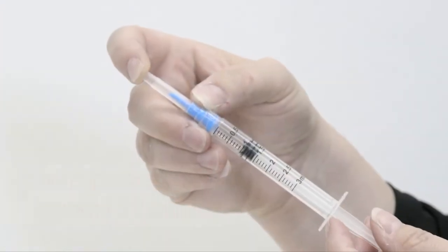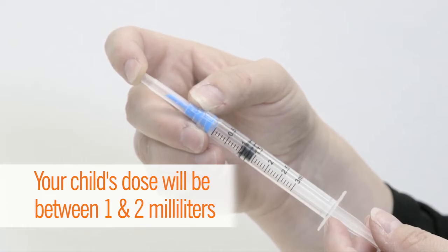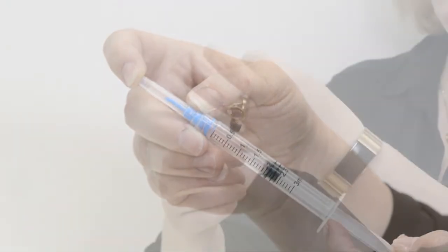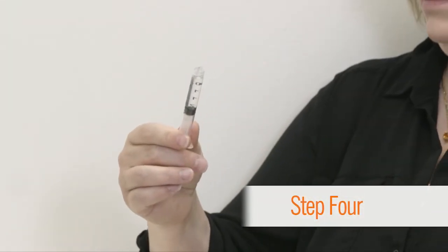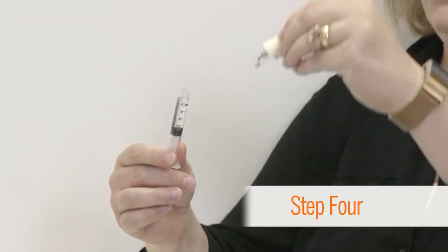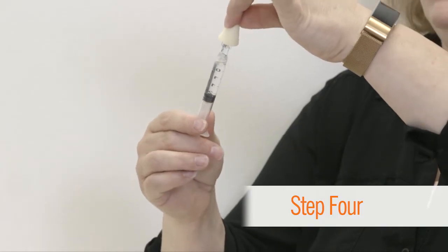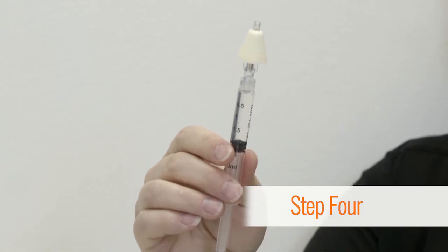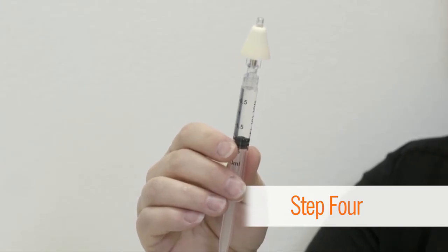Depending on your child's dose, you will have between one and two milliliters of medication. Remove the blunt tip needle from the syringe and place the atomizer on the syringe. Make sure the connection is secure so that no medication is lost at the connection site.